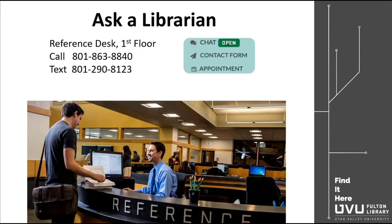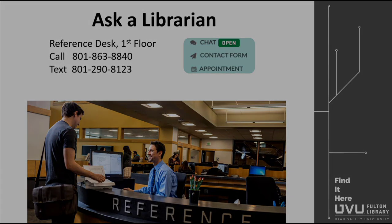You can also ask the librarian at the reference desk to look over your keywords. The reference desk is on the first floor of the library. You can call us at 801-863-8840, text us at 801-290-8123, or chat with us from the home screen at uvu.edu/library. You can also email us or send an appointment to meet with me directly. This concludes Part One of Art Research: Topics and Keywords. Look for Art Research Part Two for searching examples, my favorite databases, and some of my favorite searching tips and tricks.